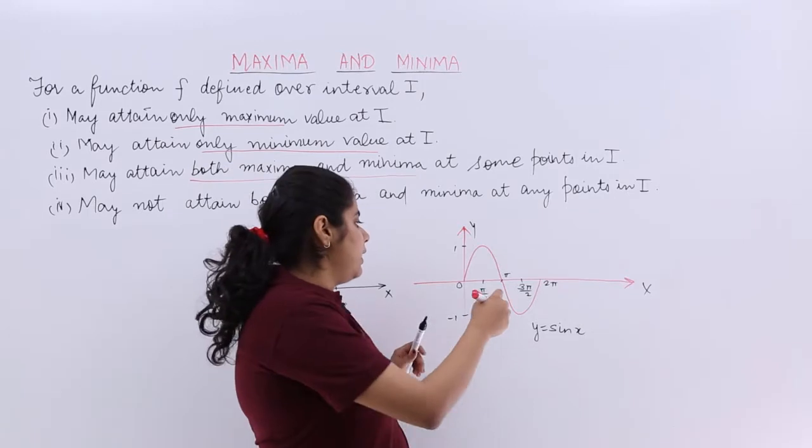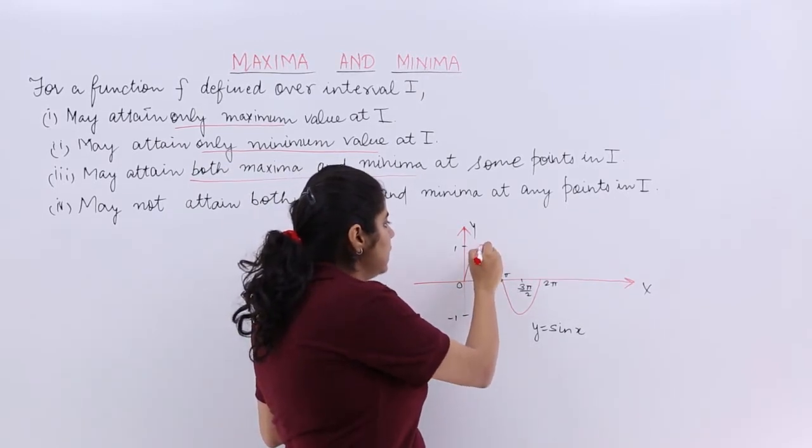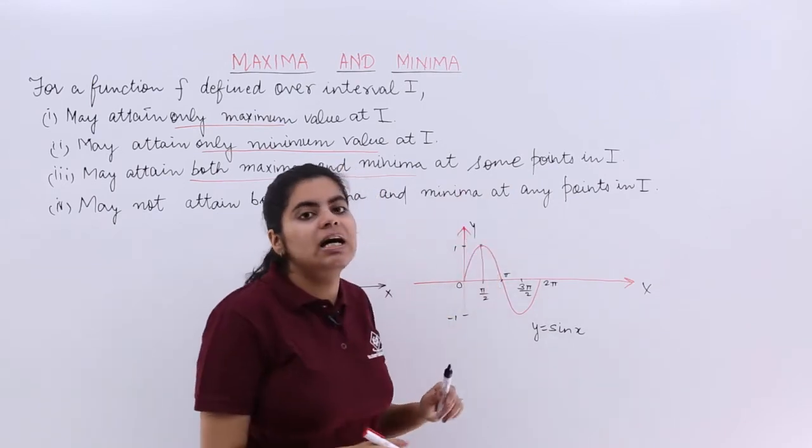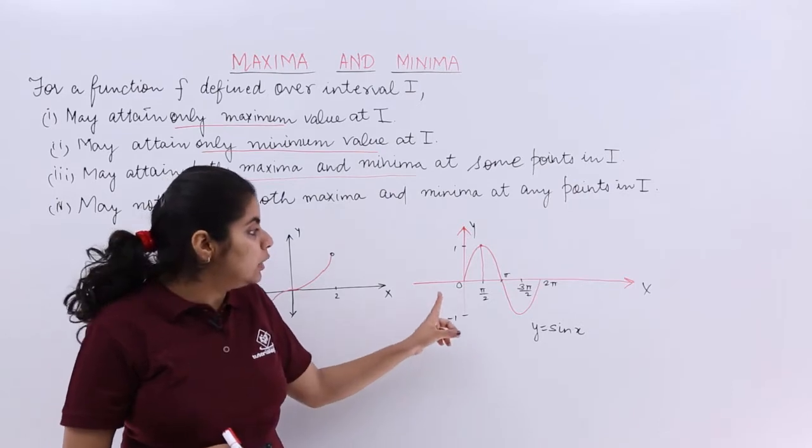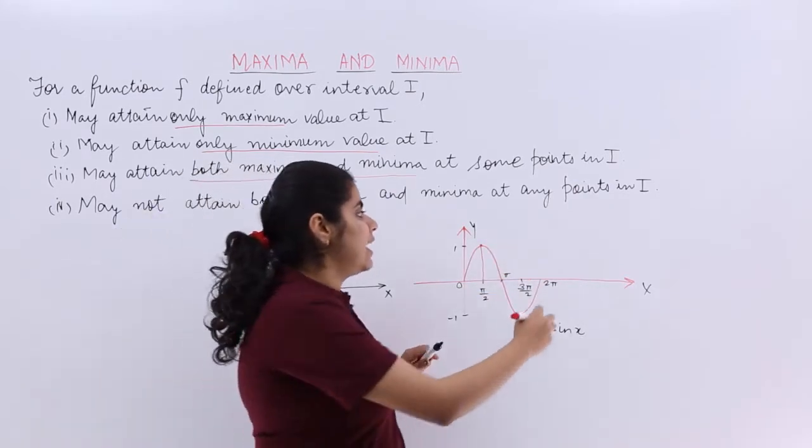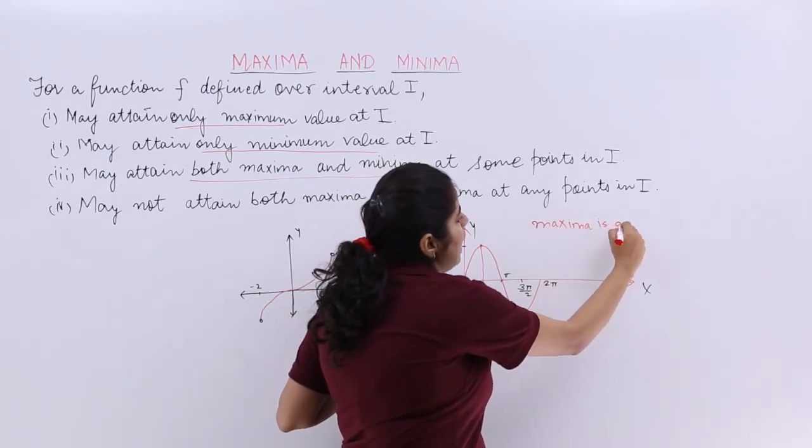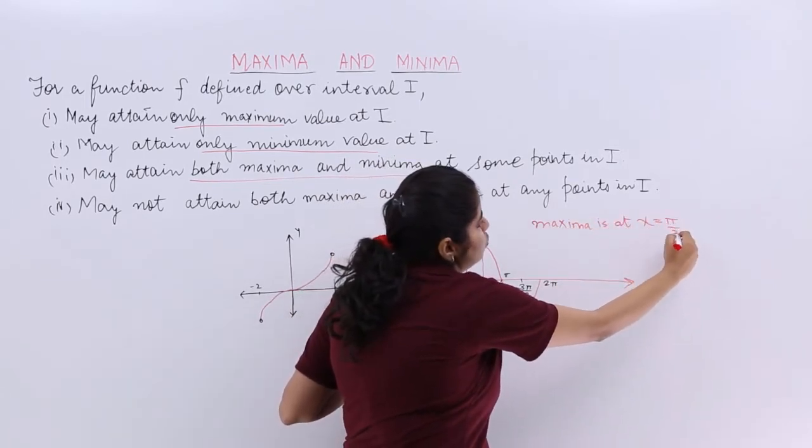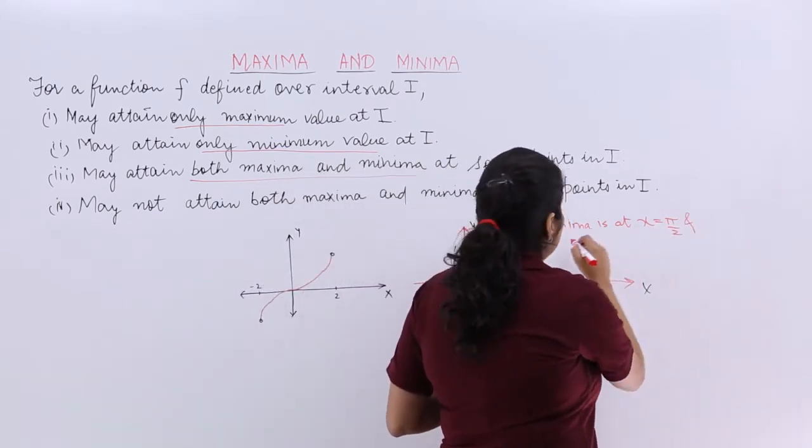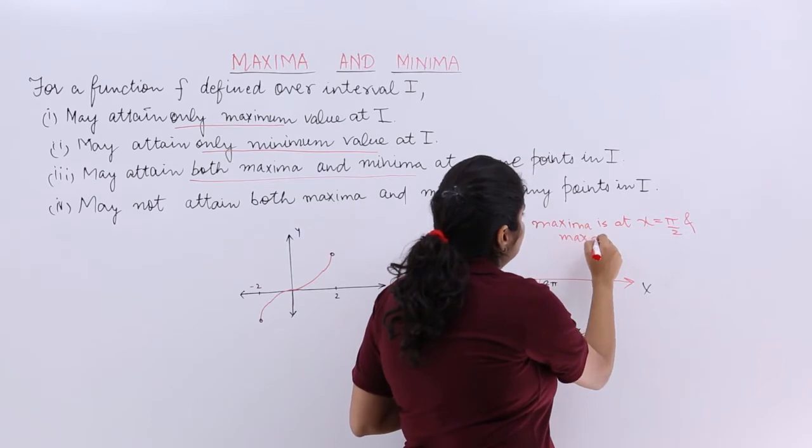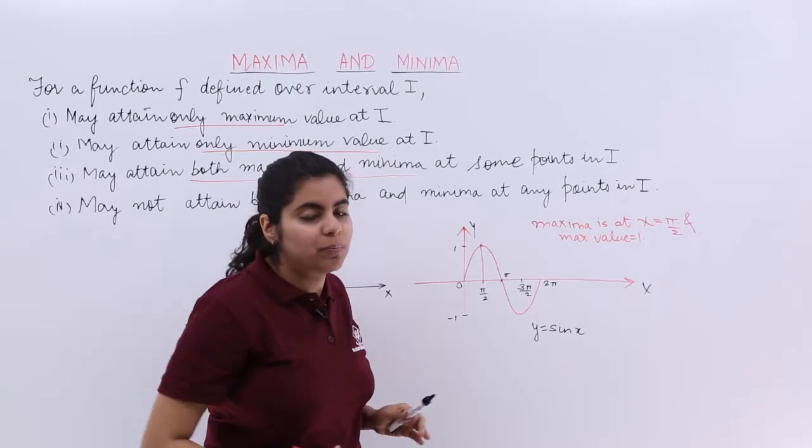Now you see that what is sin π/2? It is 1. It is attaining the highest value. sin x is attaining the highest value 1 in the interval 0 to 2π at π/2. So I say that Maxima is there. And the Maxima is at x is equal to π/2. And it is 1. And maximum value is 1. Right? We are talking only about 0 to 2π. Mind it.